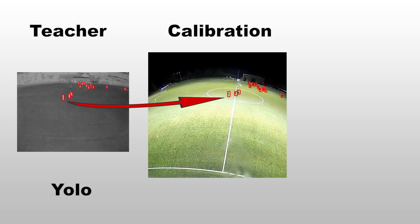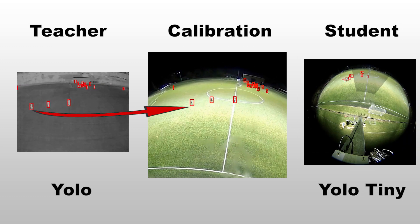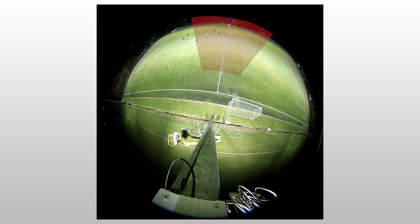Now let's prepare our data to use the online distillation approach in our particular context. As the teacher network, we reuse a YOLO network from a previous work that detects players on the thermal camera. Using the camera calibration, we transfer the player bounding boxes to the fisheye images, obtaining surrogate ground truth annotations to train a student YOLO Tiny network on the fisheye images. However, if we train the network this way, it will only be able to detect players inside the common region filmed by both cameras. We will need to create new annotations outside of this region to detect those players.